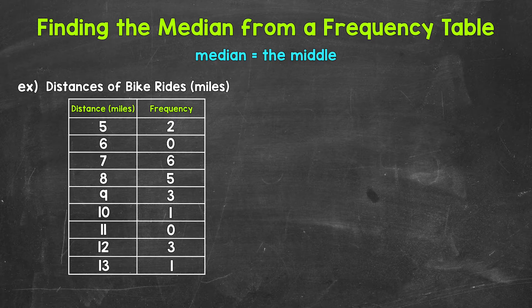Let's jump into our example where we have a frequency table displaying the distances of bike rides. So let's say that a person tracked the distances of their bike rides for a month. These are the results. So let's find the median, the middle. Now in order to find the median, we first need to list the values from least to greatest.